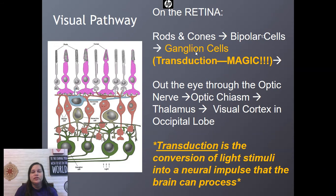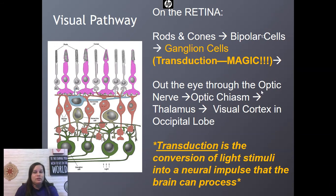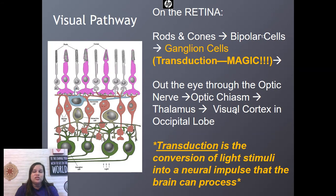The axons of the ganglion cells weave together like a braid to form the optic nerve, which is really a whole bunch of nerves tied together. That neural impulse travels down the optic nerve, exiting out of our eyeball behind our eyes to a crisscross called the optic chiasm. Then that signal goes to the thalamus, which relays the signal to the correct lobes of the brain — sending it to the visual cortex in the occipital lobe.